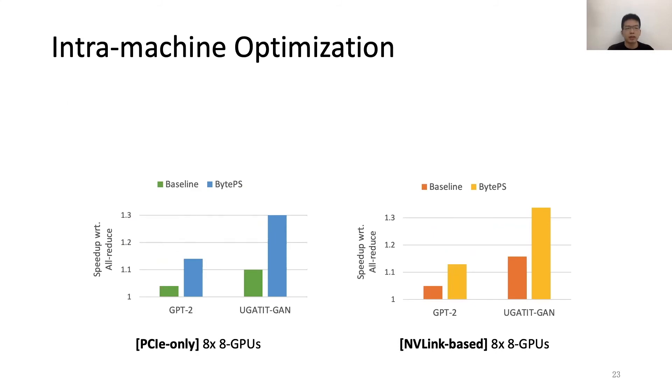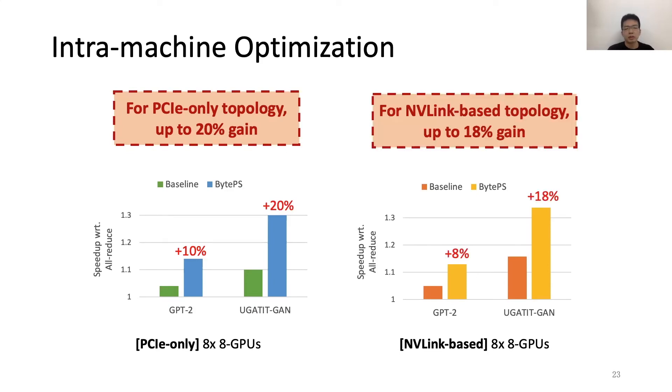Next we evaluate the intra-machine optimization. The figure on the left shows the results on PCIe-only machines, and for this topology, we have up to 30% gain. The figure on the right shows the results on NVLink-based machines, and for this topology, we have up to 80% gain.